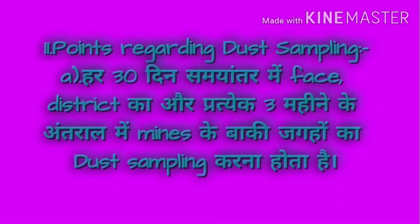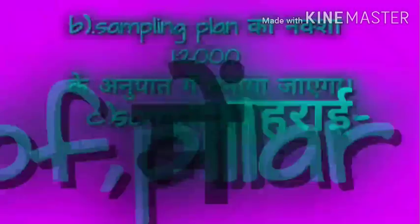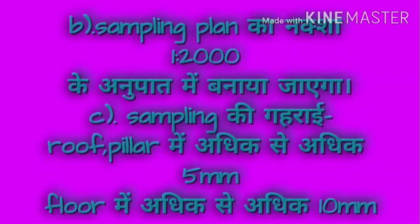You need to know about dust sampling — sampling is done every 30 days and every 3 months in the rest of the area. The sampling plant ratio is 1 to 2 thousand. The sample size should be less than 5 mm, and the floor sample should be less than 10 mm.